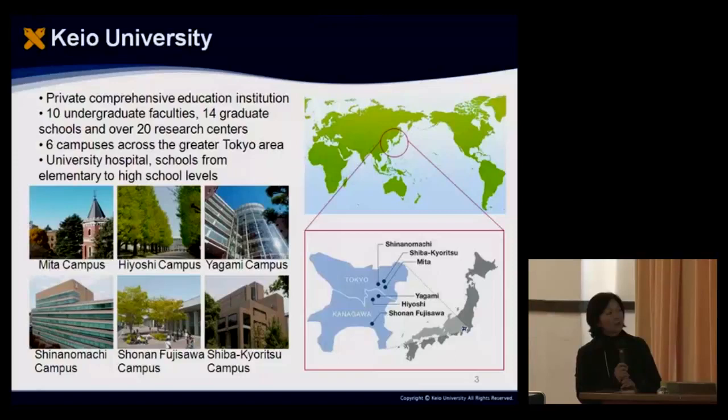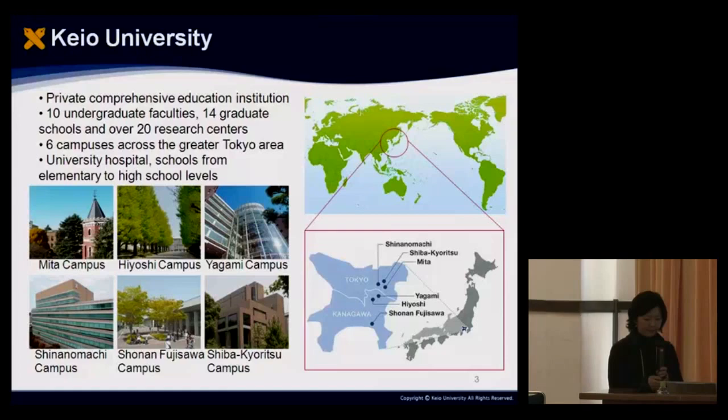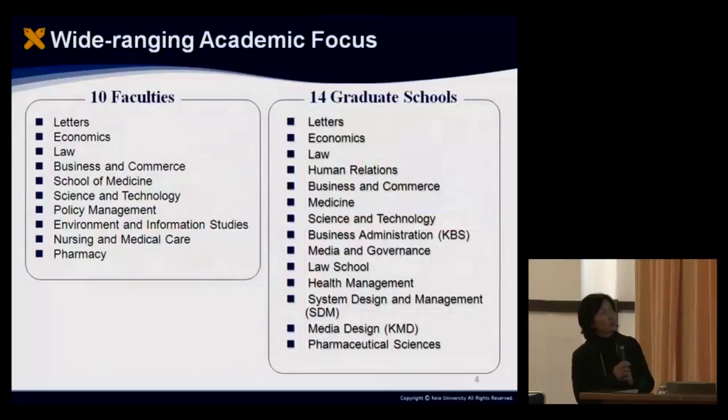The Shonan Fujisawa campus is our teaching hospital and medical school, located in Shinjuku, and is a newly merged, formerly independent school of pharmacy. So we have quite a stretch of campuses. As a comprehensive university, we have 10 faculties — that means academic departments — and 14 graduate schools, some of which are newly established.